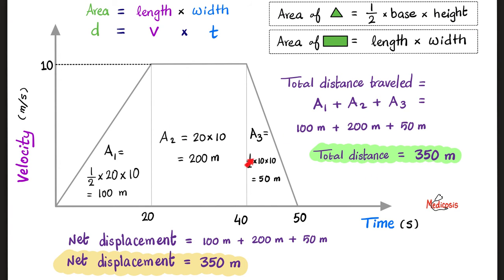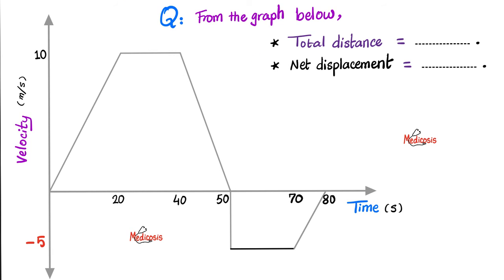And here are the same answers in color. Remember that the area of the triangle is half times the base times the height, and the area of the rectangle is the length times the width. Let's try this one. From this graph, what is the total distance traveled in 80 seconds? And how about the net displacement in the same amount of time? Please pause.